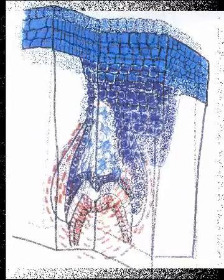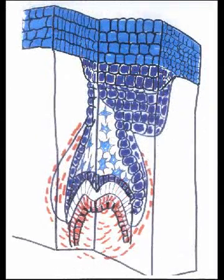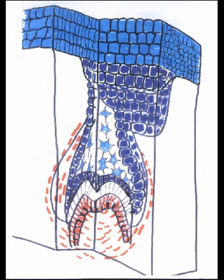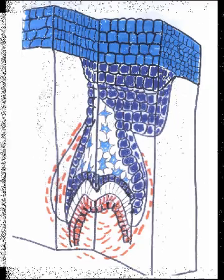Here we are at a later stage, sometimes called the bell stage, in which we have further development of the enamel. In this case, it looks like a molar, with the surrounding dentin lining the inside of the tooth, which will end up closing to form the pulp of the tooth.